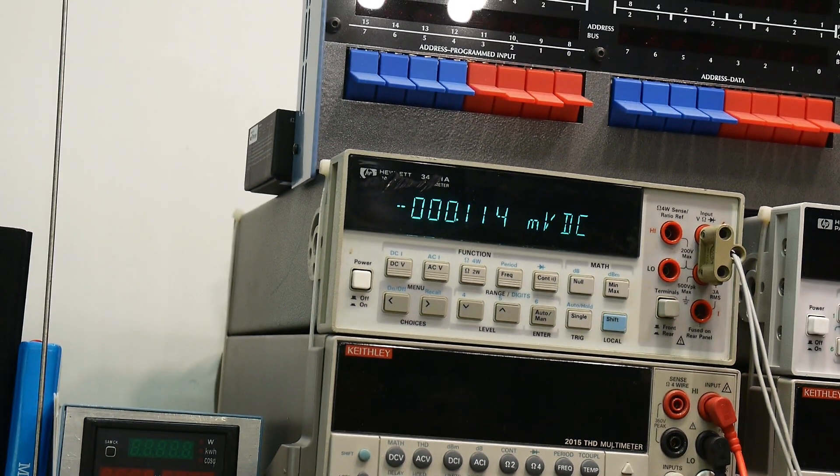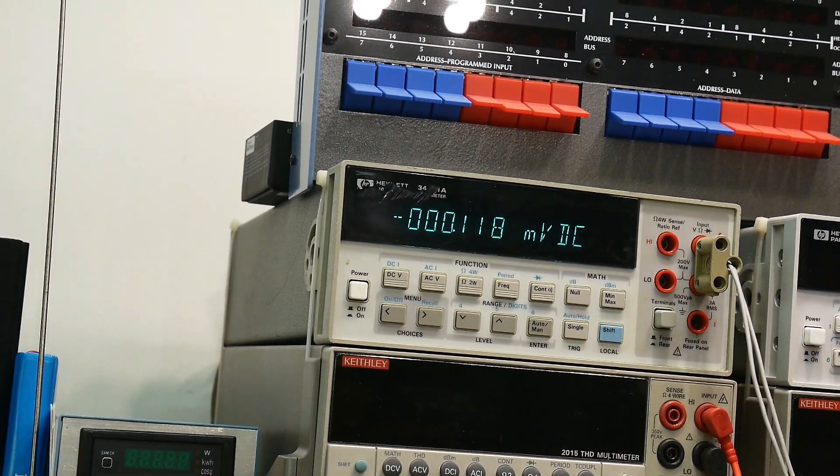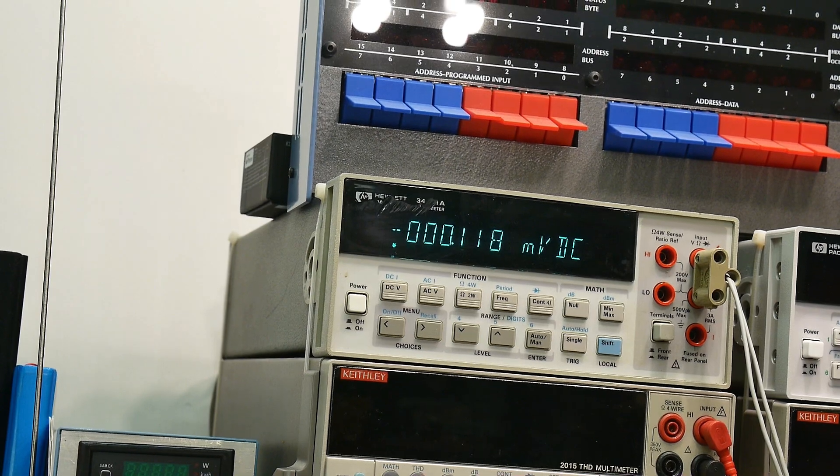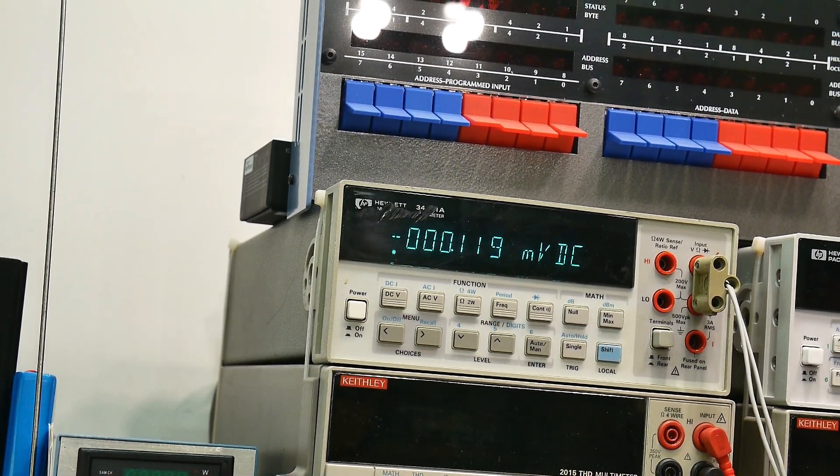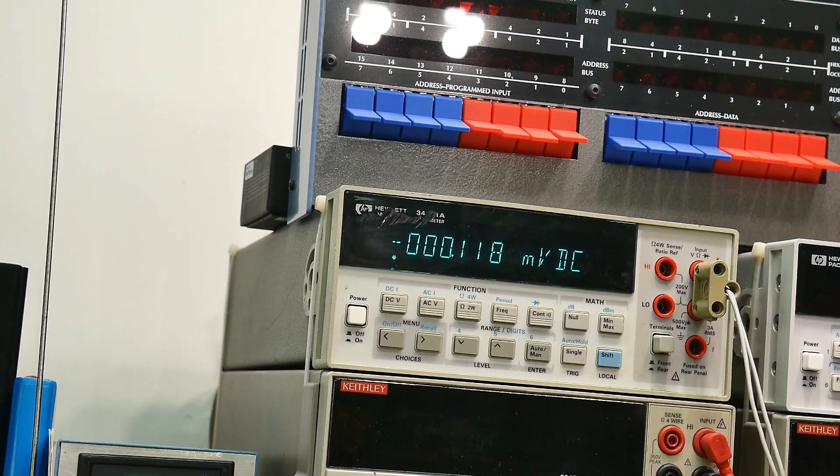Now let's measure the offset voltage on it. And it's 115 microvolts. So not bad. It's five times bigger than the 07, but it's still pretty small. It's not one to five millivolts. It's 0.1 millivolts. But we can make it better.